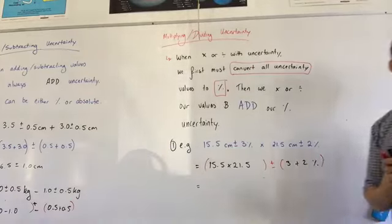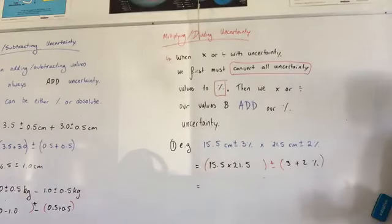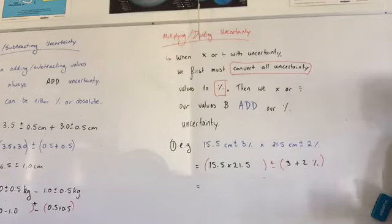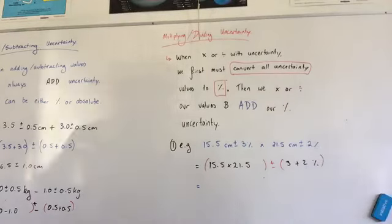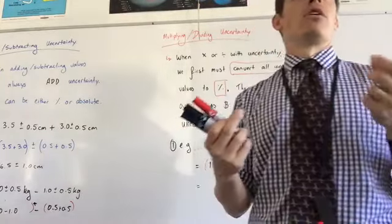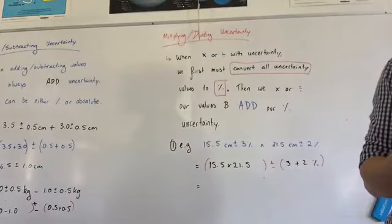And then what do I do after that? What do I do once I've got my percentages as uncertainties? So I'm at this stage here where I'm doing this sort of sum. I've got 15.5 centimeters plus or minus 3% times 21.5 plus or minus 2%. What do I do? And what do I do with the 15.5 and the 21.5? I multiply them. What about the percentages? I add them together. And again, regardless of whether this is a multiplication or a division, I add my uncertainty because we're assuming worst case scenario.